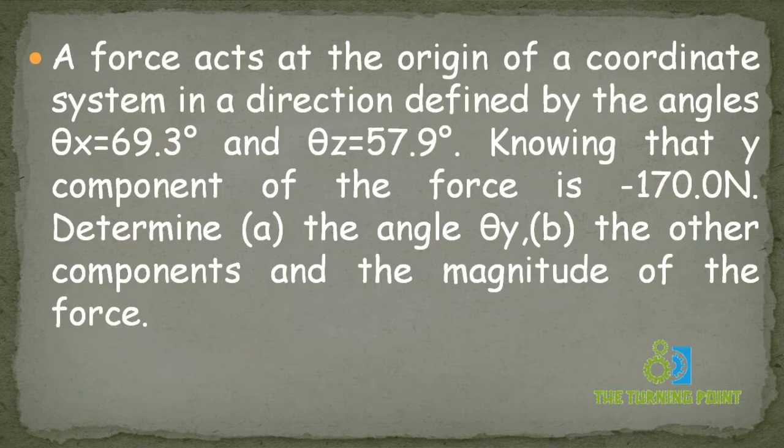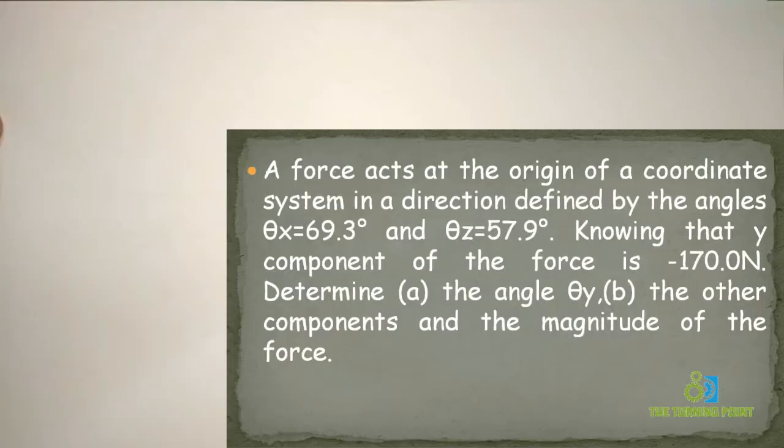A force acts at the origin of a coordinate system in a direction defined by the angles Theta x is 69.3 degrees and Theta z is 57.9 degrees. Knowing that y component of the force is minus 170 N, determine Theta y and other components and magnitude of the force.